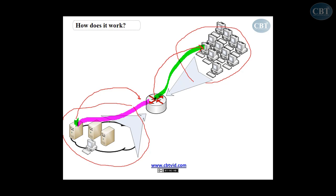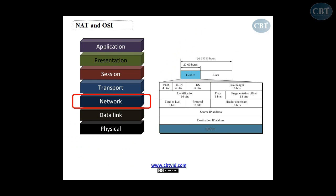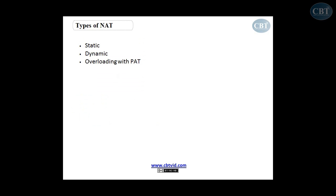Later we'll go through a hands-on scenario to show how to configure NAT. In terms of the OSI reference model, NAT operates at Layer 3 — the network layer. As you can see in the picture, the packet header contains a source IP address and a destination IP address. NAT works by looking at these source and destination addresses and changing them as needed.